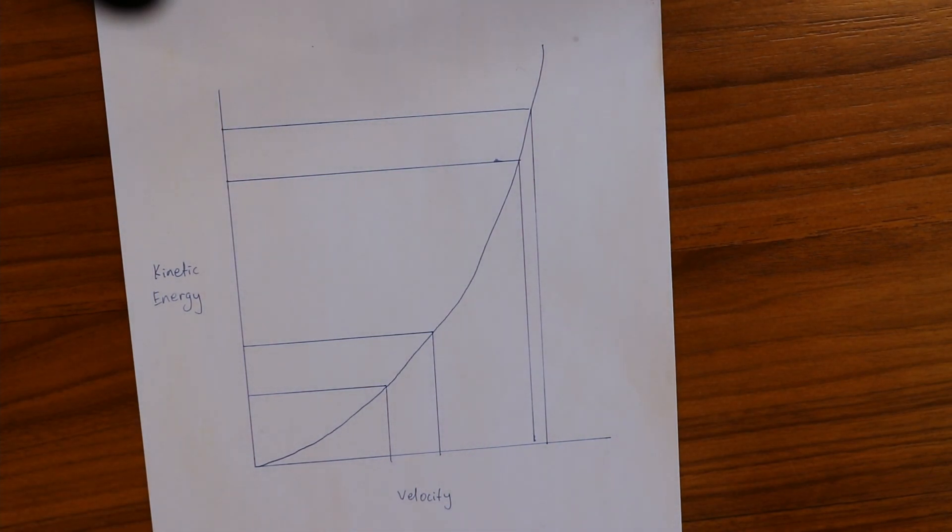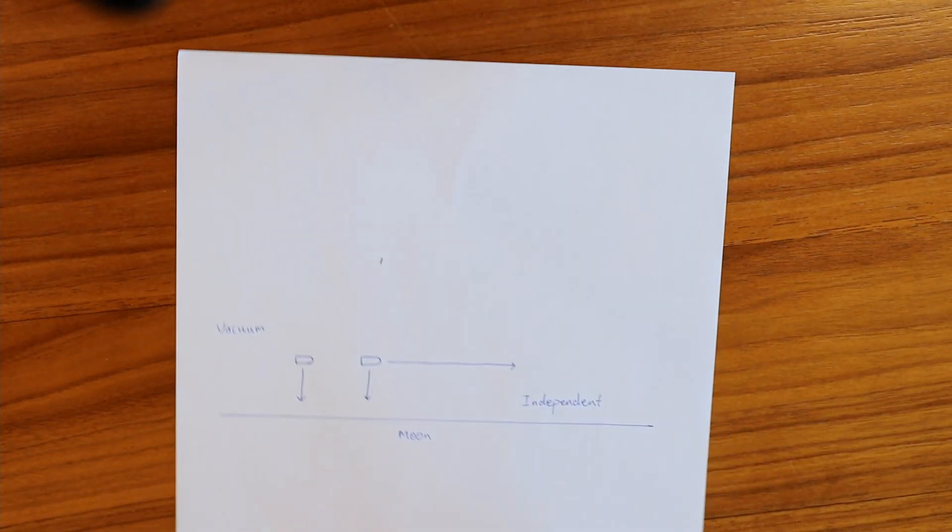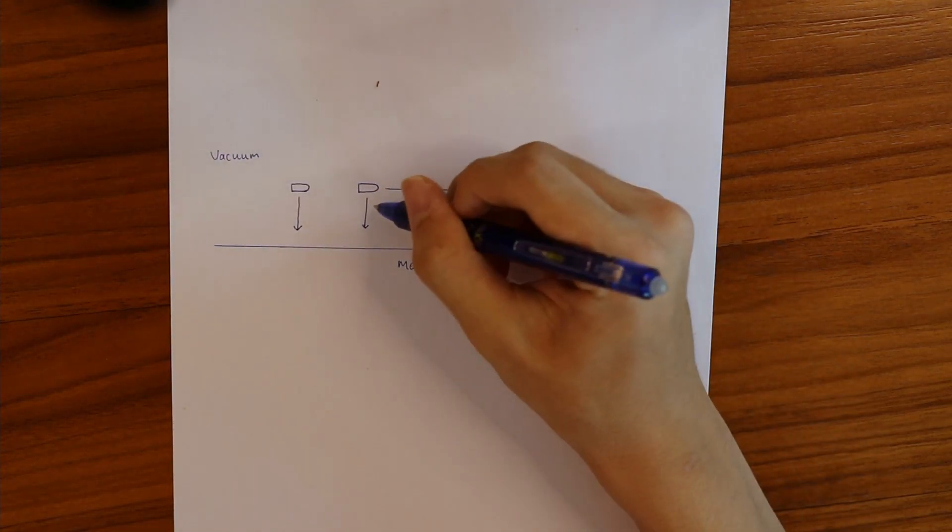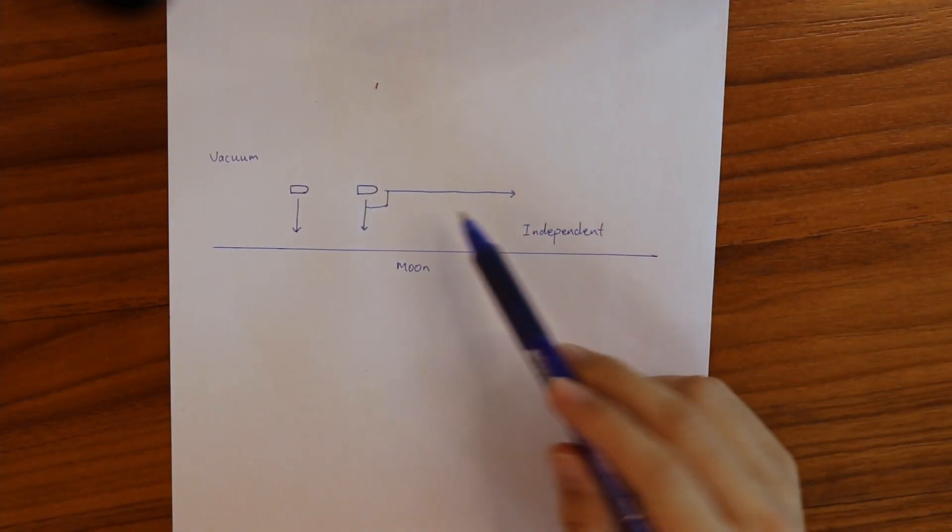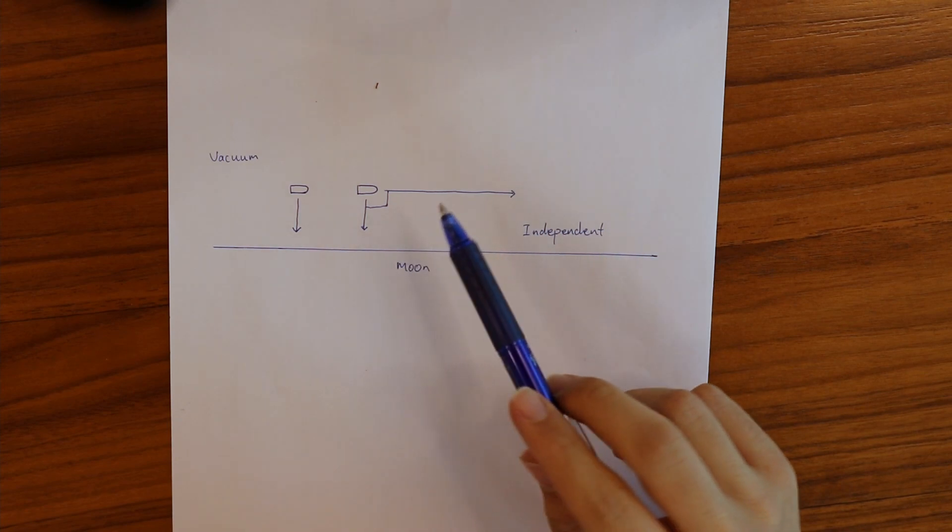This is why it seems weird that the same force of gravity can move both bullets the same amount. But the difference is that this force is adding velocity in the other direction, at a right angle. So the existing speed and kinetic energy of the object makes no difference.